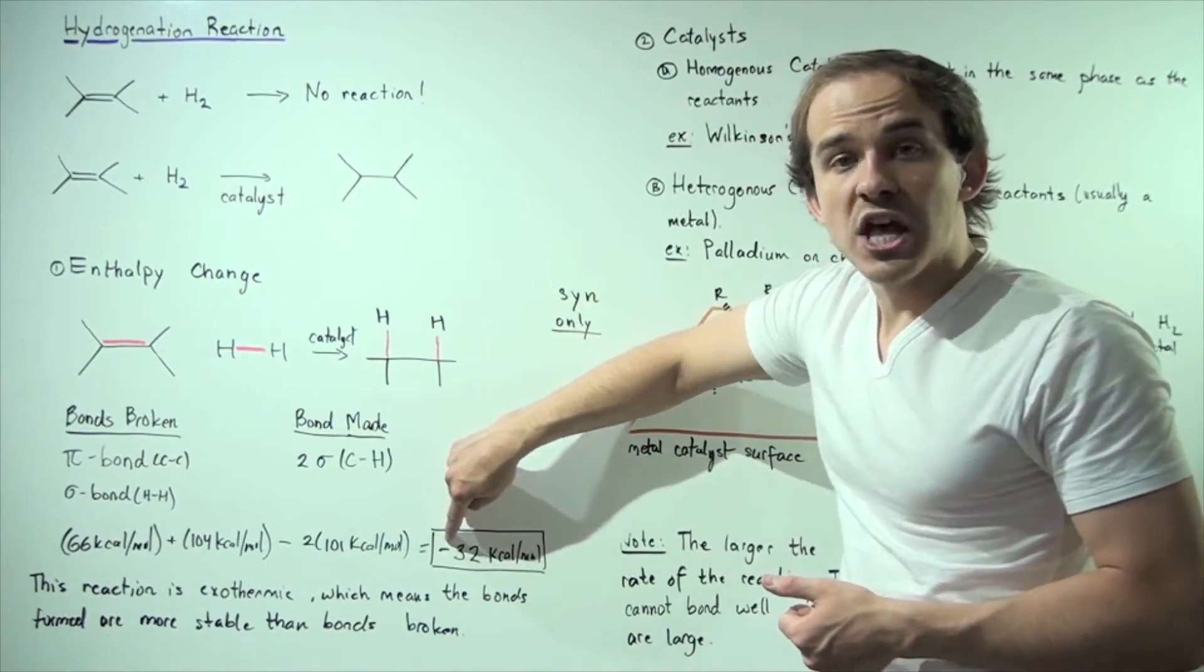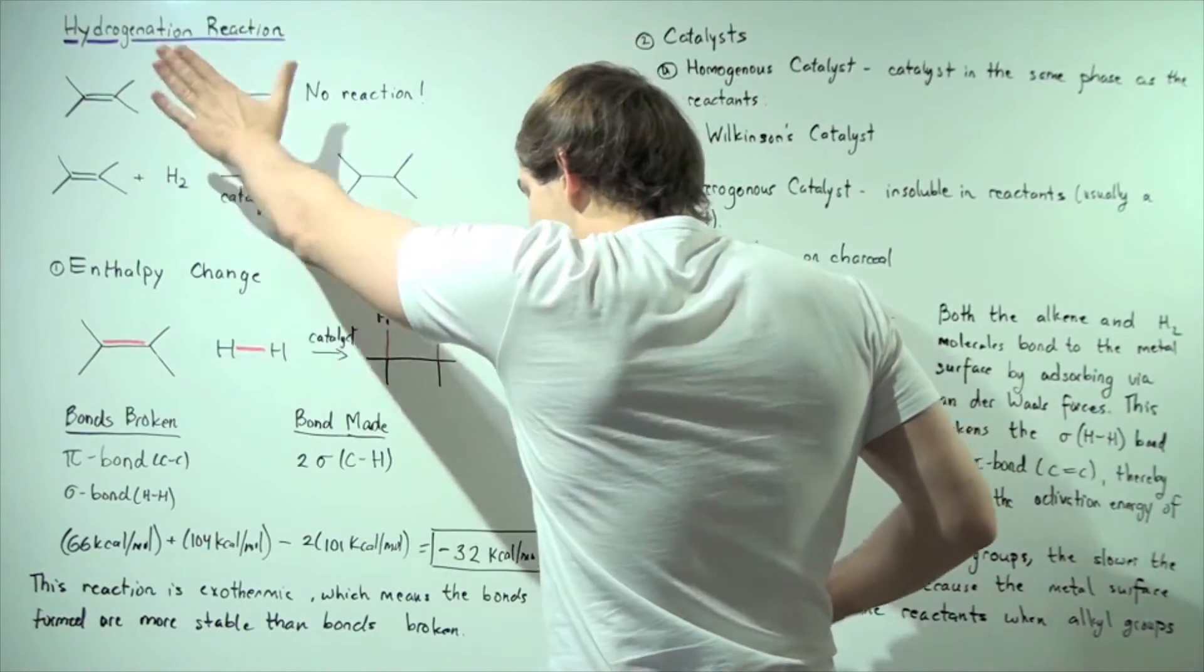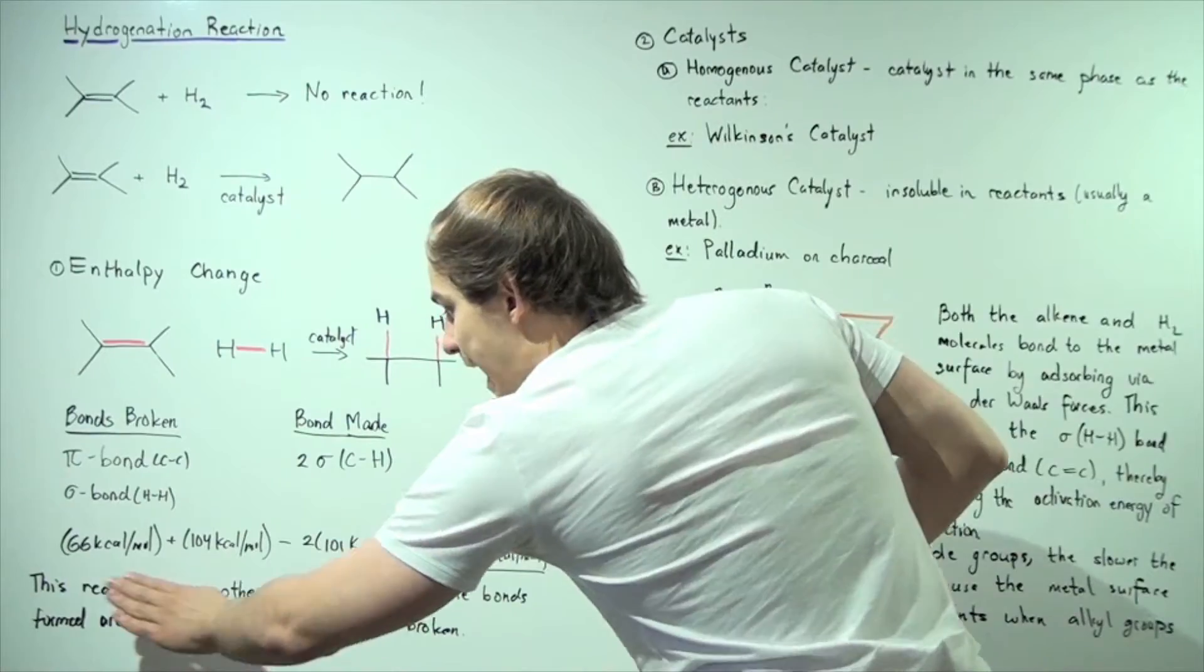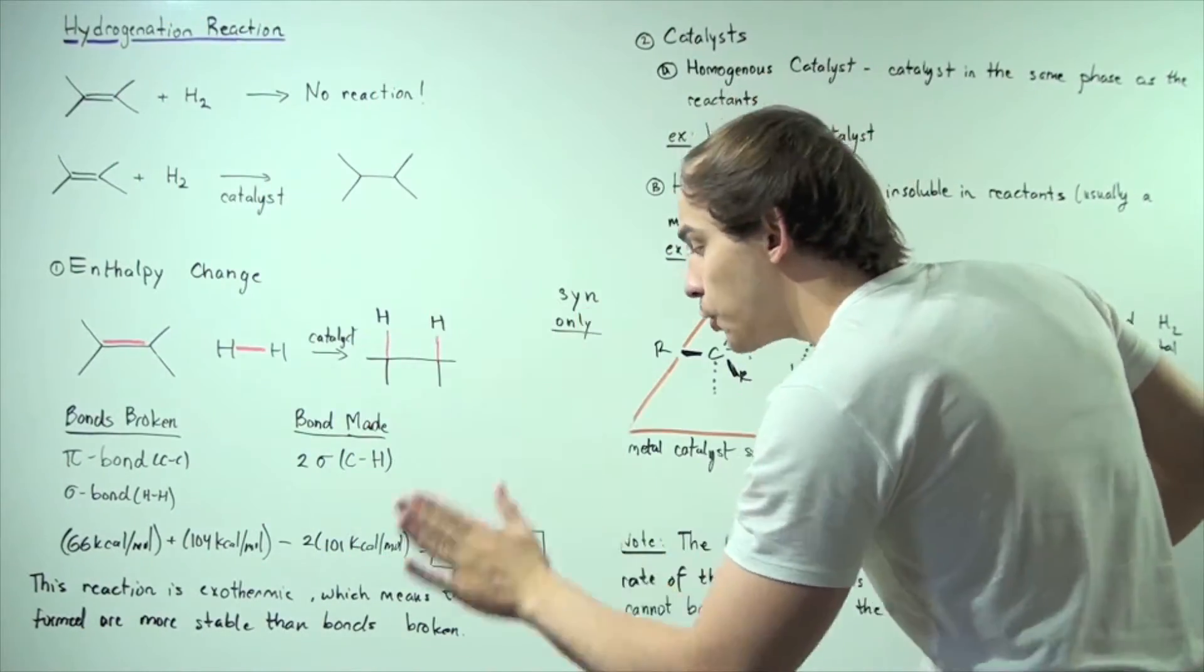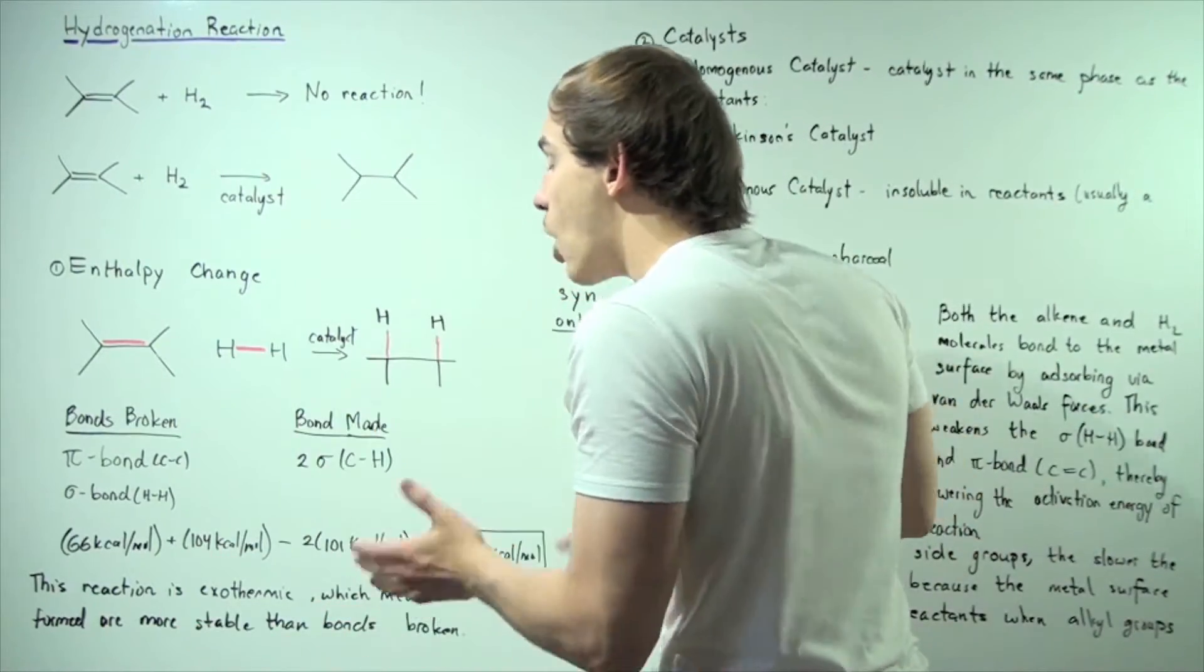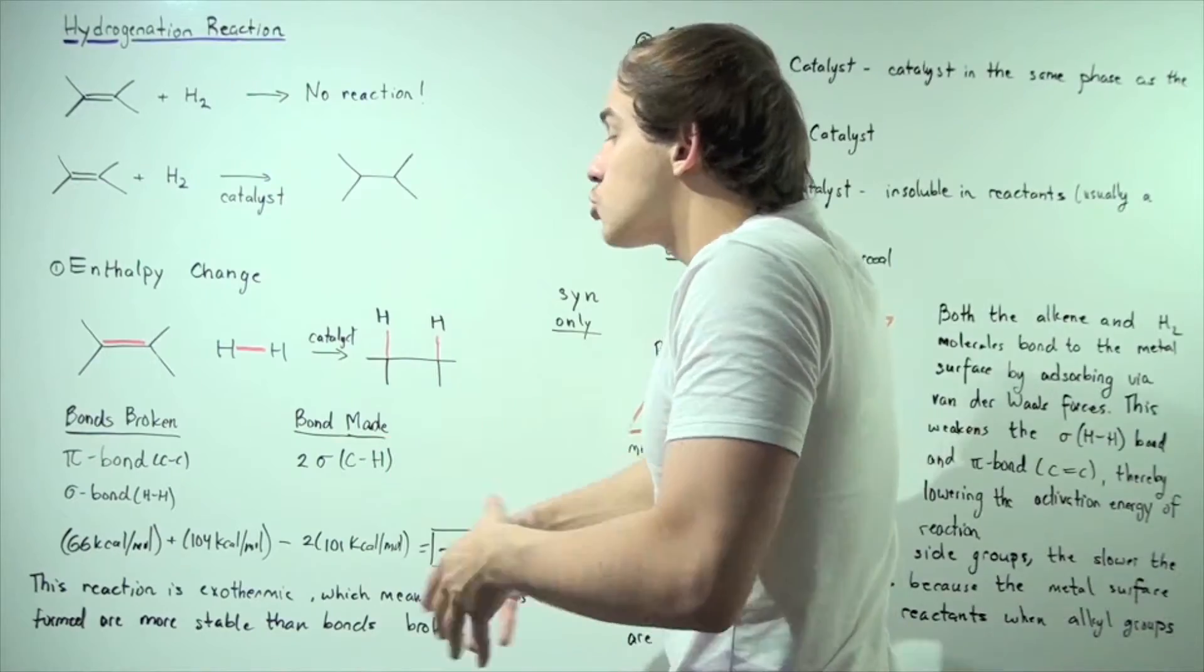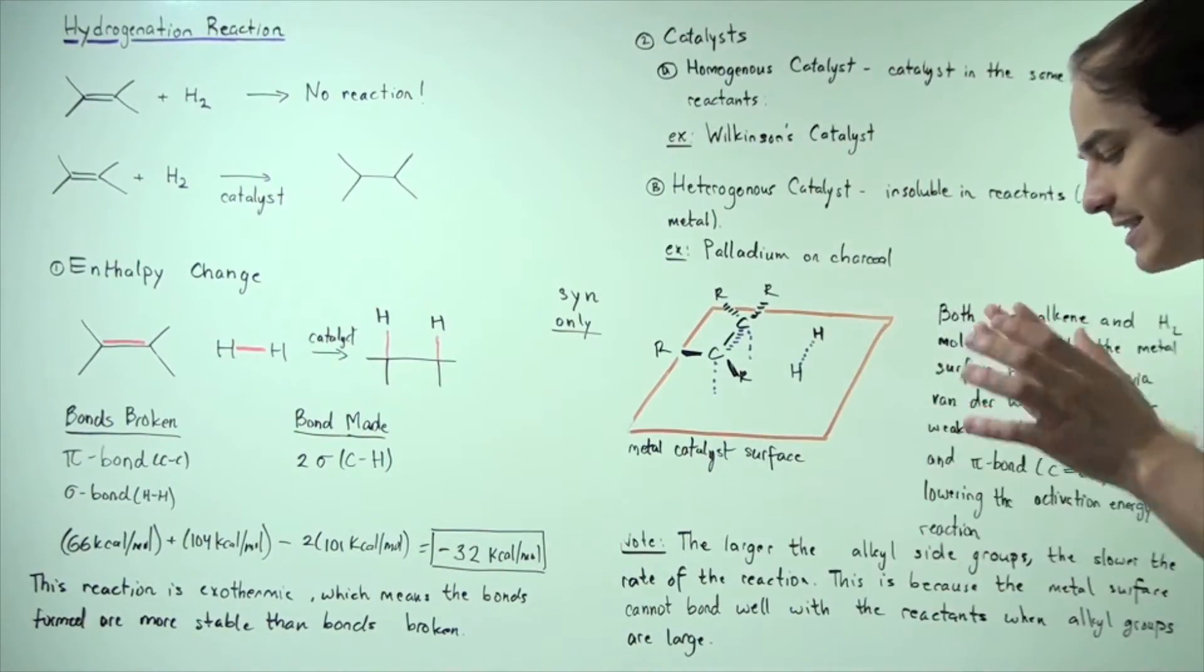This negative simply means that energy is released in this hydrogenation reaction. And the 32 simply means how much energy is being released. So this reaction and generally speaking, hydrogenation reactions are exothermic, which means the bonds being made are stronger, more stable than the bonds being broken. So these two bonds together are stronger than these two bonds that are being broken.